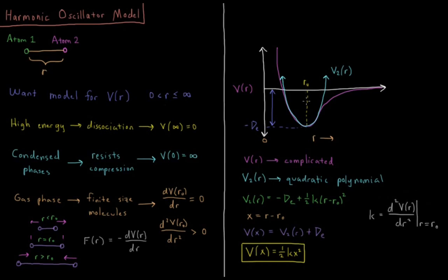we want the minimum to be at 0. So we can add DE to our V(x), V(x) being V2(r) plus DE. So we have V(x) equals 1/2 Kx squared.